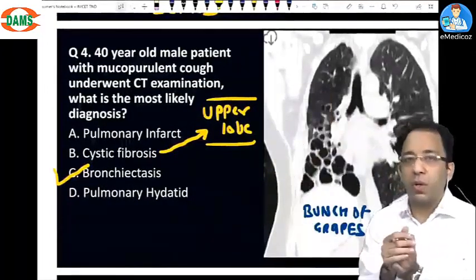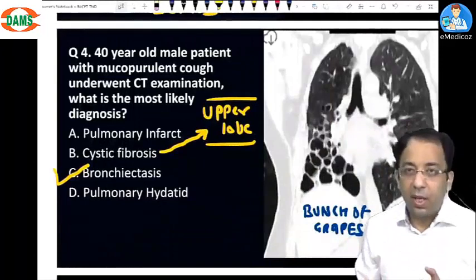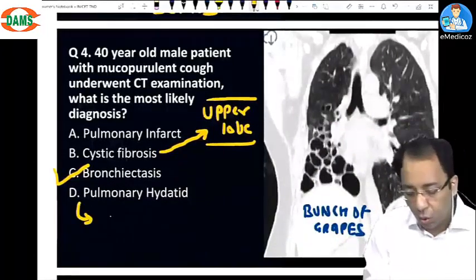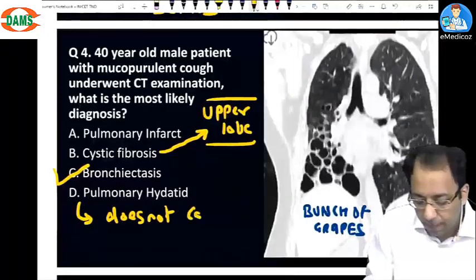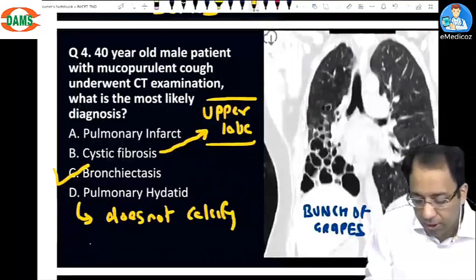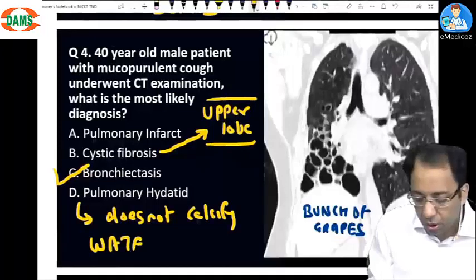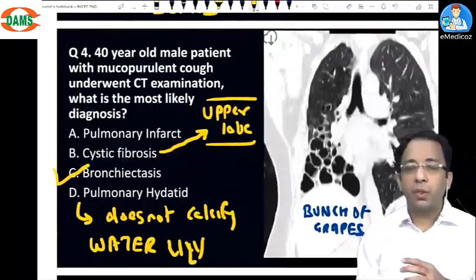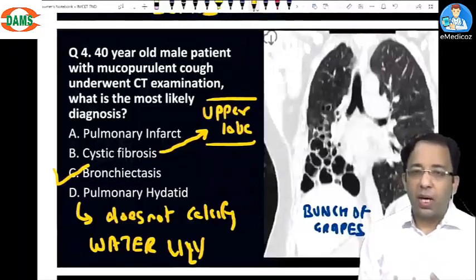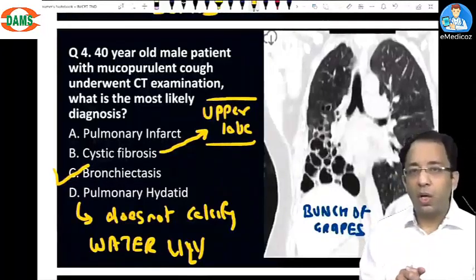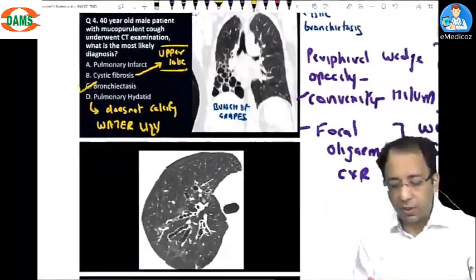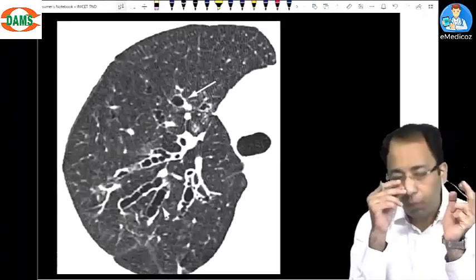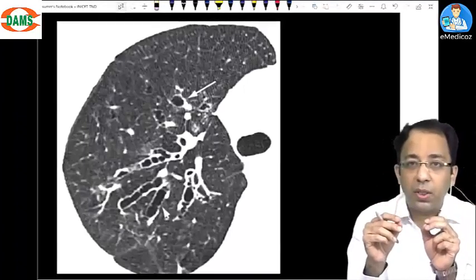Hydatid cyst in the lung is a large structure that usually does not calcify and grows to large sizes. If there is partial rupture, you will see a water lily-like appearance, where the daughter cyst floats within the cavity.